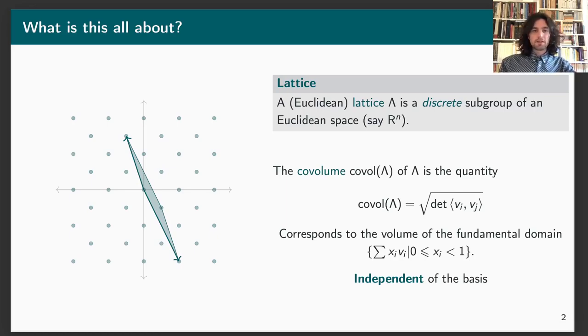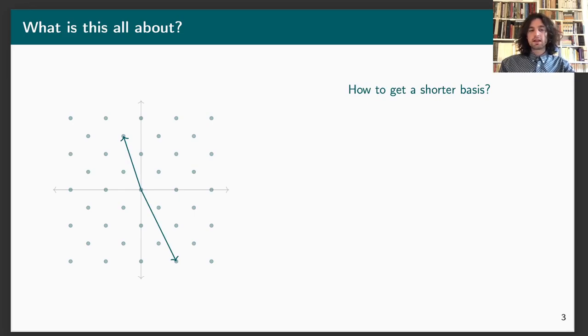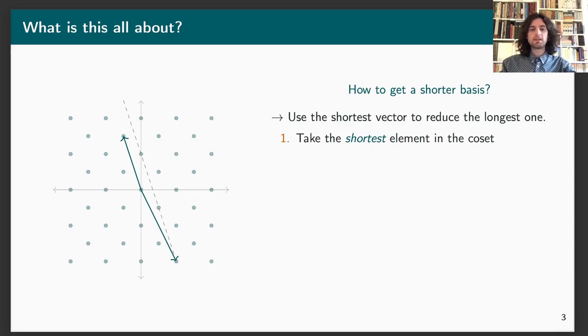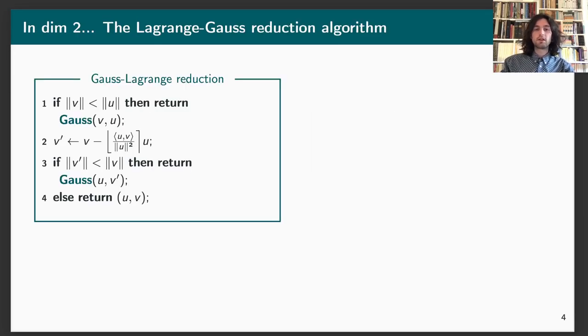Actually, I'm speaking of having multiple bases in your lattice, so that the question is how can I get from a skewed one, a very bad one, to a nice one like the first one I showed. A solution to do that, at least in dimension two, is to use the shortest vector to reduce the length of the longest one. More precisely, you take the shortest element in the coset which is spanned by the short vector and goes through the long one, and then you get a shorter vector. And then you repeat as long as you can. And at one point, this process will stop. This is in substance the so-called Lagrange-Gauss reduction algorithm.